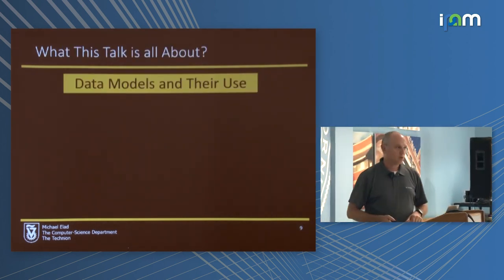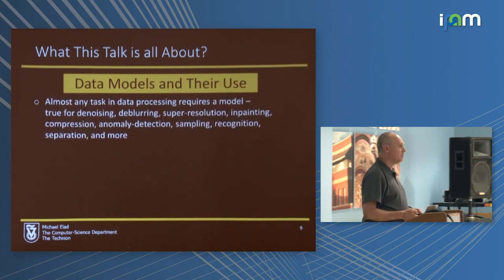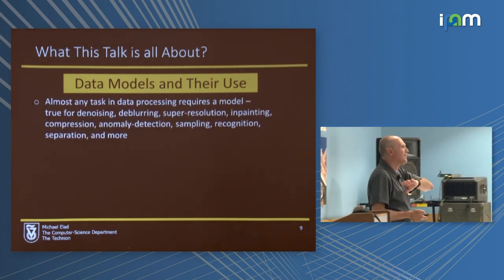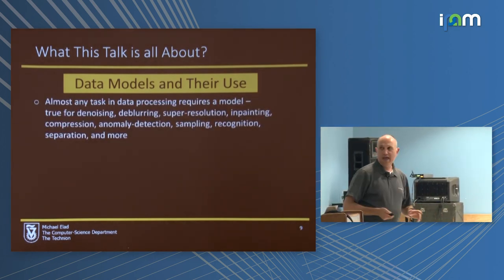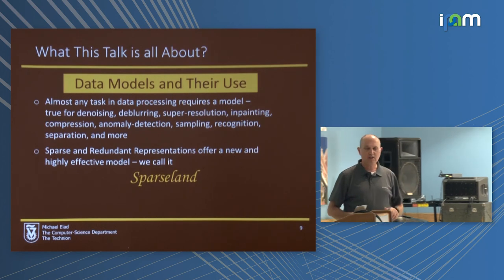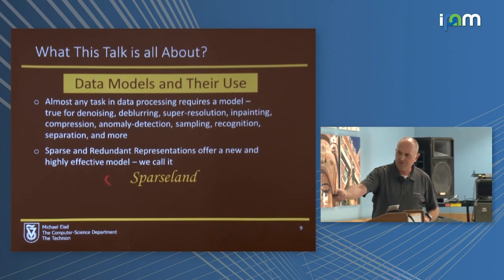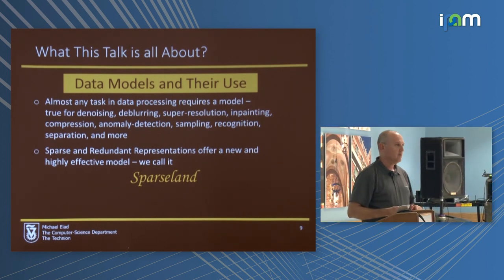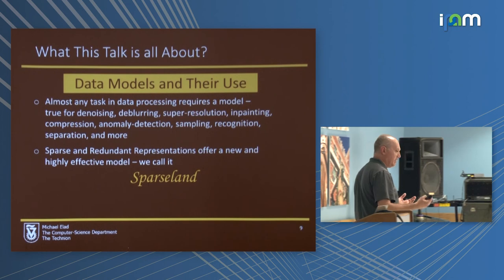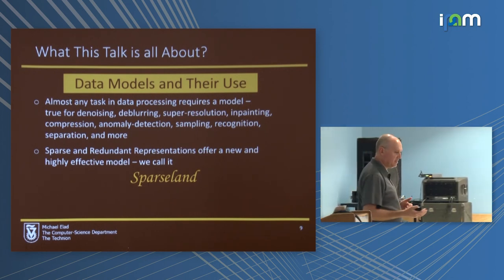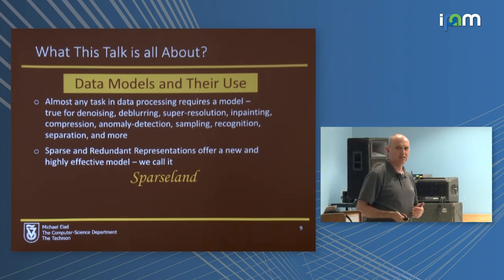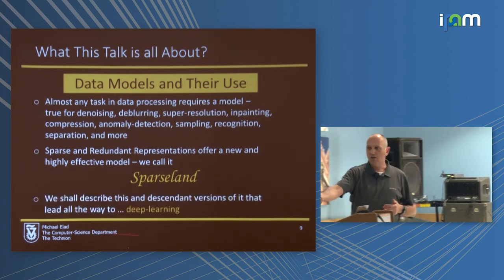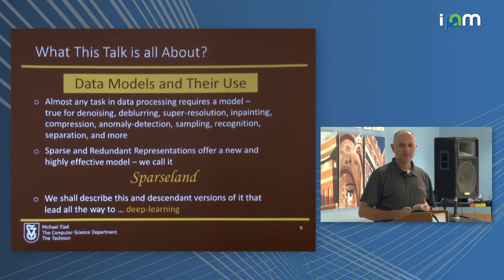This talk is about models because they are everywhere — we use them practically for everything we do. Specifically today I'm going to emphasize sparse land, and then go to its descendants: the CSC and the ML-CSC. These will take us all the way to deep learning.